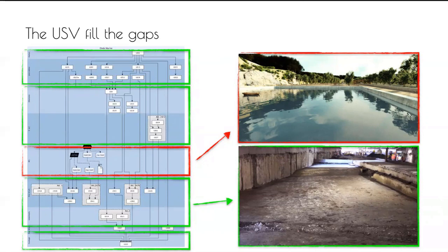The stratigraphic units can be grouped into virtual actions for simplicity — for instance, all the actions to construct a foundation, a colonnade, the podium of a temple, and so on. The reconstruction of an epoch lies between the phase to be reconstructed and the next phase.